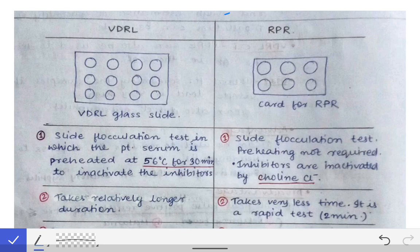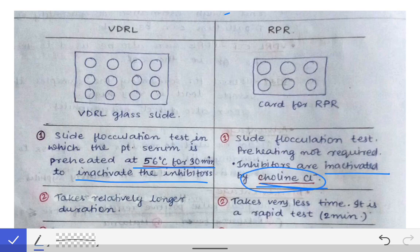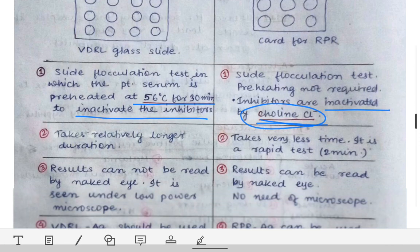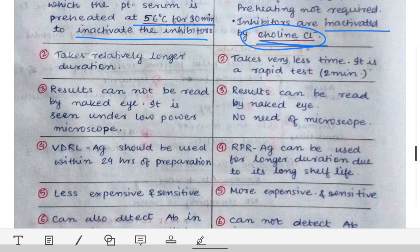The first difference: before the VDRL test, the patient's serum must be heated at 56 degrees centigrade for 30 minutes to inactivate the non-specific inhibitors. In RPR, there is no need to heat the serum; instead, the inhibitors are inactivated by choline chloride. This is a common MCQ point.